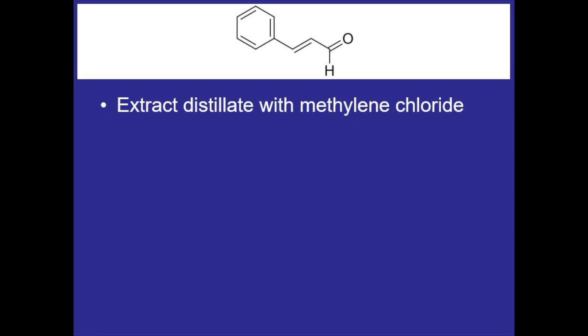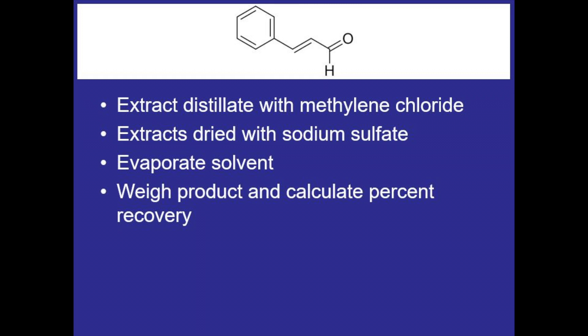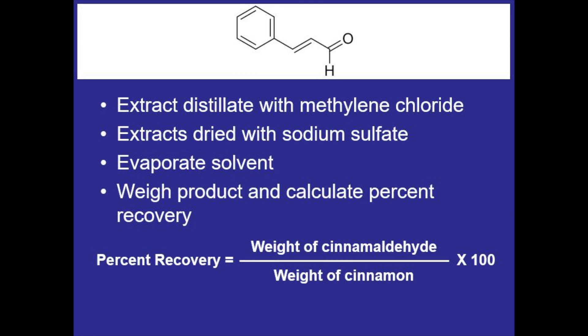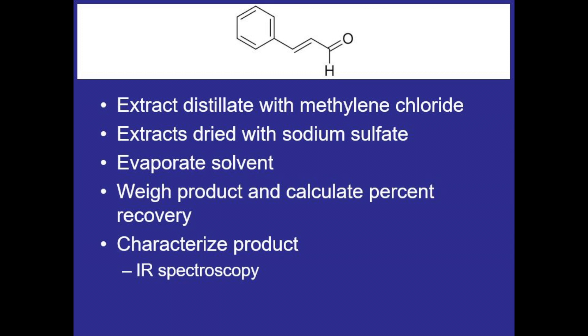Then we'll extract cinnamaldehyde out of that distillate using methylene chloride, and we'll do three extractions. Those extracts can be dried with sodium sulfate and the solvent evaporated. This will leave us with pure cinnamaldehyde product which we can weigh to calculate a percent recovery. We won't be calculating a percent yield because we didn't do any reaction, so the percent recovery will just be the weight of cinnamaldehyde isolated divided by the weight of cinnamon used multiplied by 100. Finally we'll characterize that product by running an IR spec.